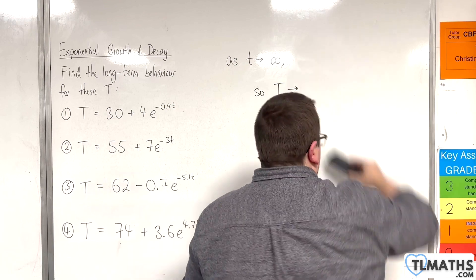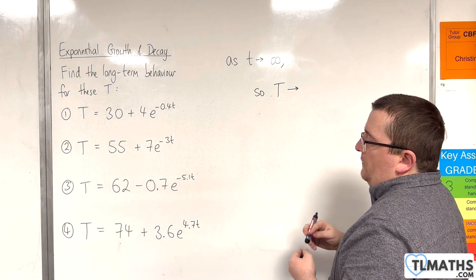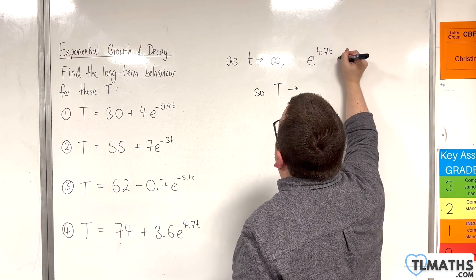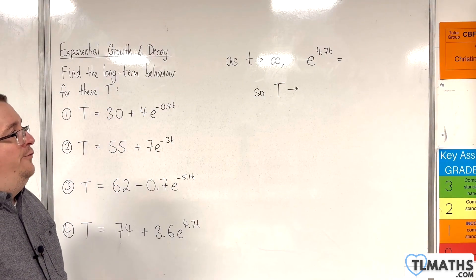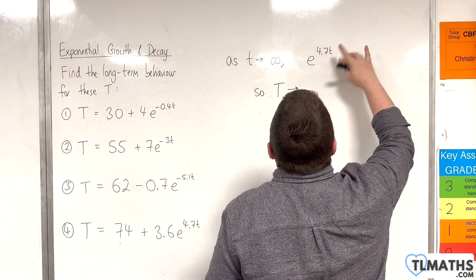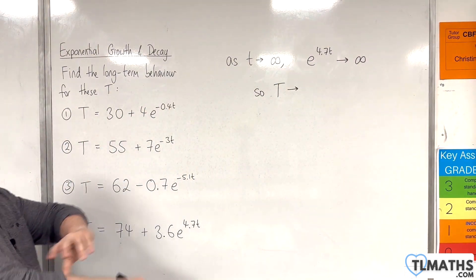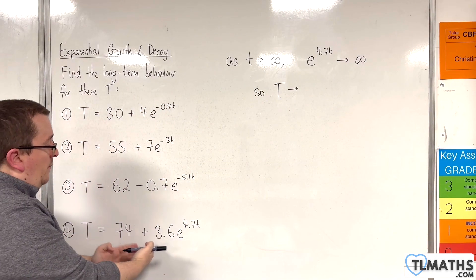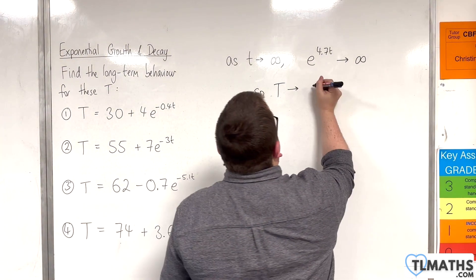Last one. We have capital T equals 74 plus 3.6e to the 4.7t. Now, as t tends to infinity, e to the 4.7t — note how there is no negative in the power in this one. e to the 4.7t is going to get larger and larger and larger. So, actually, this is going to tend towards infinity. So, capital T will tend towards 74 plus 3.6 times something that is getting bigger and bigger, and so this will tend towards infinity. That will be its long-term behaviour.